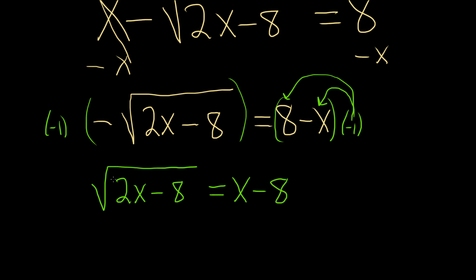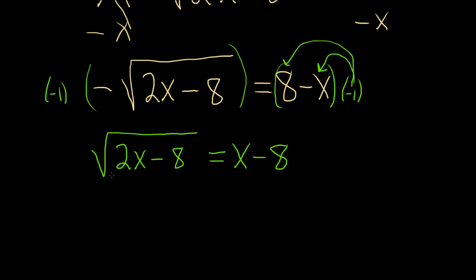Now that we've isolated the square root, we need to get rid of it. To do that, what you do is you square both sides. So squaring this, we'll get rid of the square root. So we have 2x minus 8.